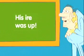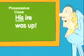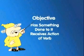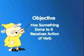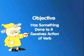Possessive case pronouns indicate ownership or possession. 'His ire was up.' Yes, I did have ownership of that ire. The third case is the objective — generally used to indicate that the pronoun has something done to it; it receives the action of the verb. 'The frog splashed him.'